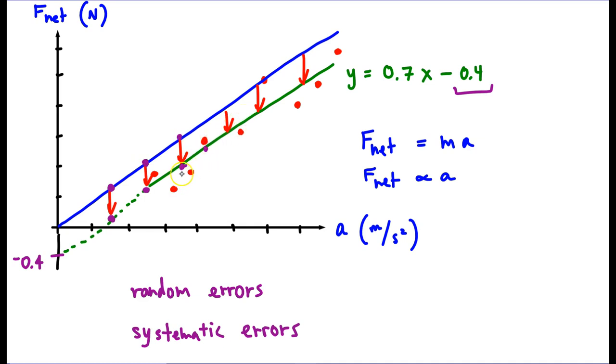But then, of course, they also had this random fluctuation on top of this. So you could describe this graph as a downward systematic error, or downward systematic shift, where the net force measurements were all too low.